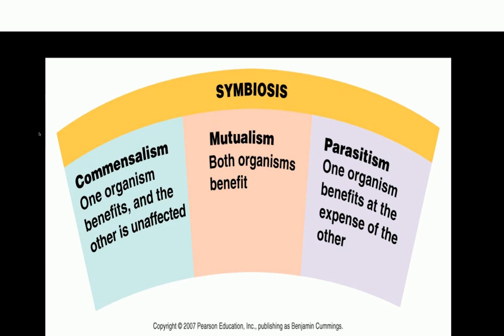Three terms are used under symbiosis: commensalism, mutualism, and parasitism. Commensalism is an association in which only the parasite derives benefit from the host without causing injury to the host. For example, Staphylococcus epidermidis sits on your skin and uses the dead cells of humans as nutrients, but does not produce any disease in humans.